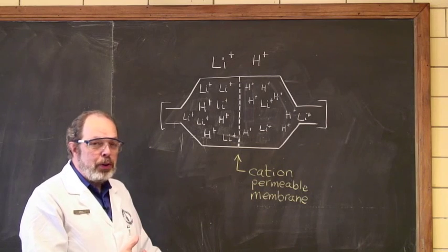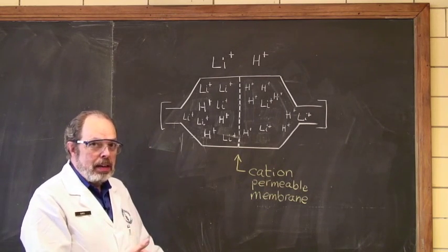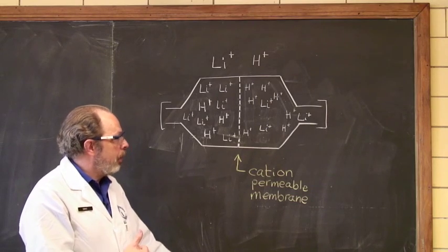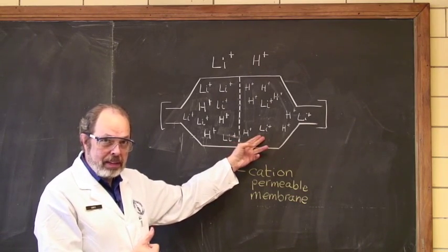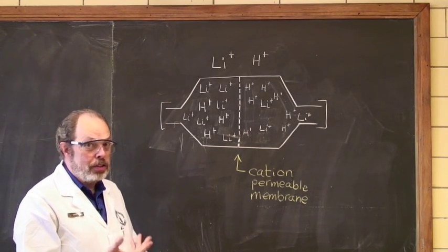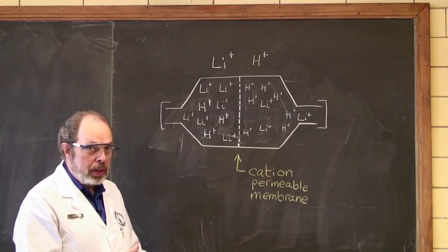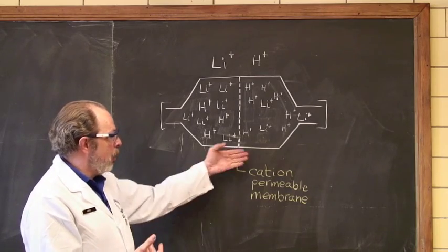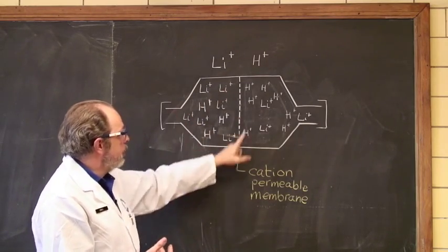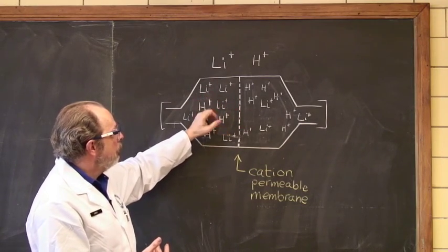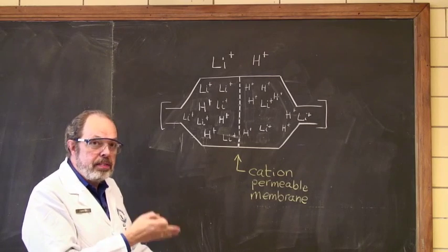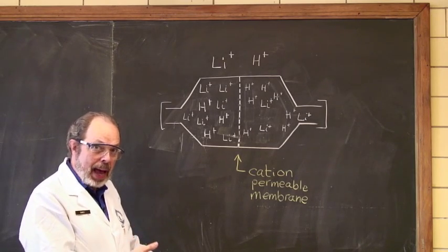Now, how are you going to analyze this? Because all of the solutions are completely colorless. However, while we can't analyze the lithium very easily, we can analyze the hydrogen ions very easily. You just do an acid-base titration. So at the end of the diffusion time, you take the contents of this side of the cell and titrate it, and you will detect that there is some H+, there is some acid present.